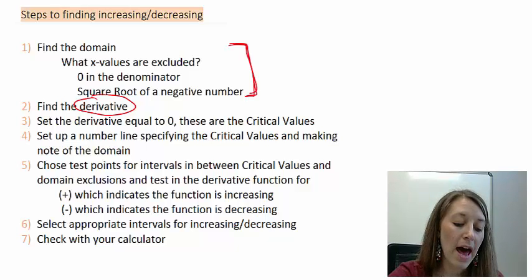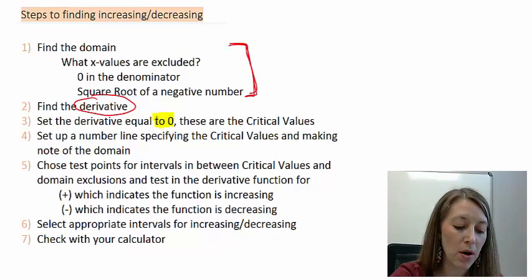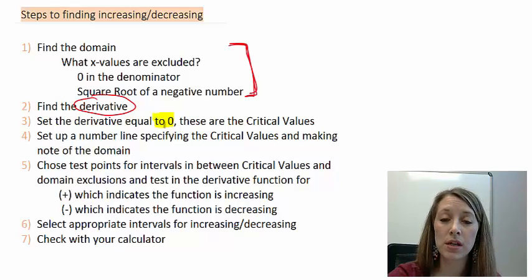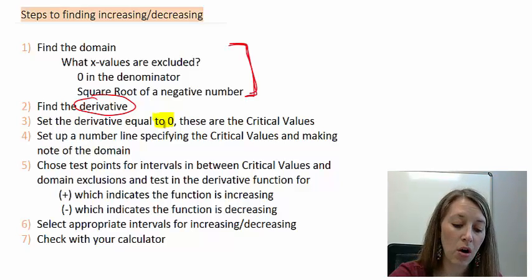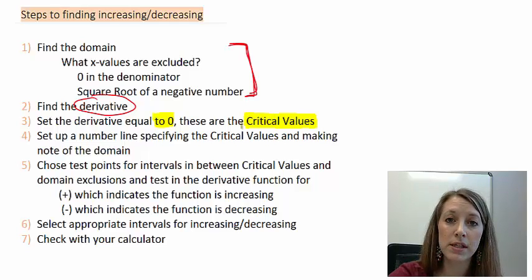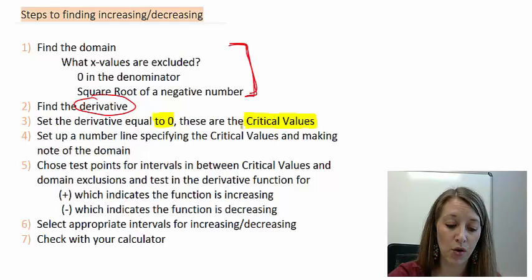After we find the derivative, we want to set it equal to zero, because that's going to be where it transitions from increasing to decreasing, or from decreasing to increasing. These are going to be our in-between points, and what these are called are the critical values. The critical values are any time it switches from increasing to decreasing, or vice versa.